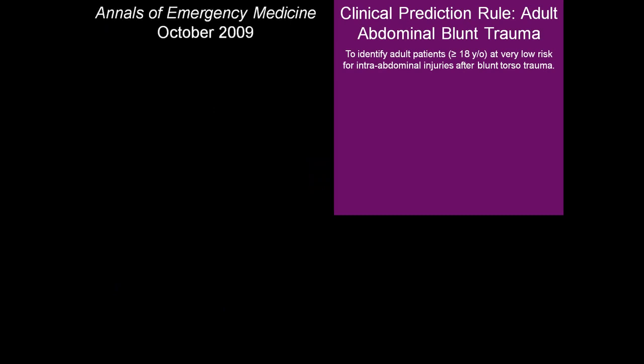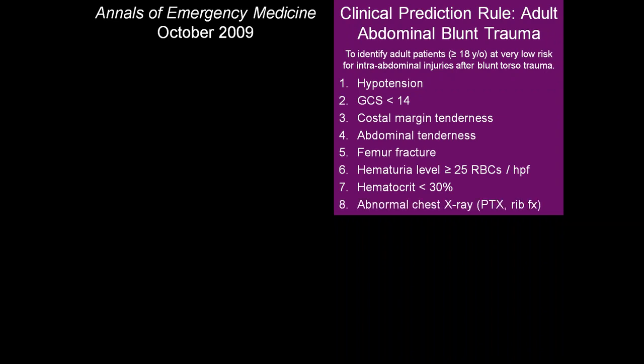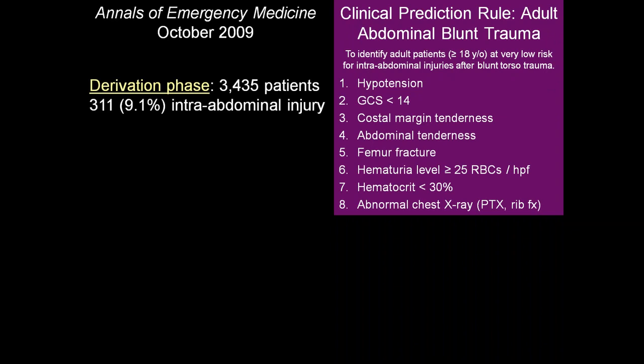This is the clinical prediction rule for adult abdominal blunt trauma, from Annals of Emergency Medicine October 2009. It looks at adult trauma patients greater than 18 years of age at very low risk for intra-abdominal injuries after blunt torso trauma. The rule criteria are: is the patient hypotensive, GCS less than 14, costal margin tenderness, any abdominal tenderness, femur fracture, blood in urine more than 25 RBCs per high-powered field, hematocrit less than 30%, and abnormal chest X-ray such as pneumothorax or rib fractures.